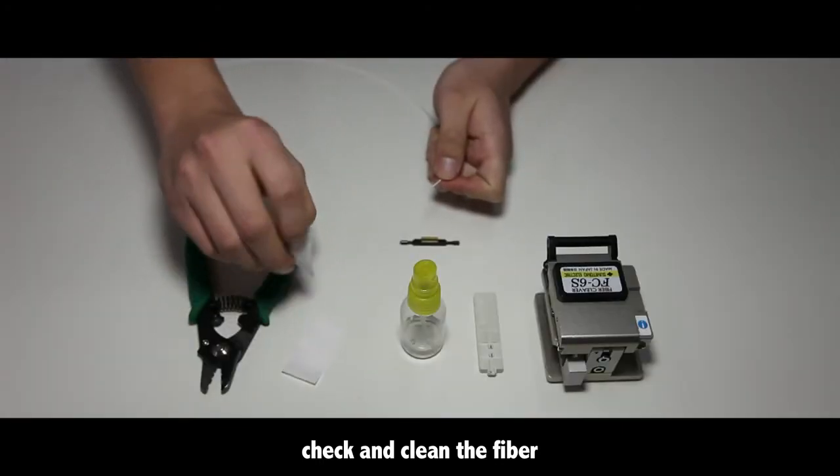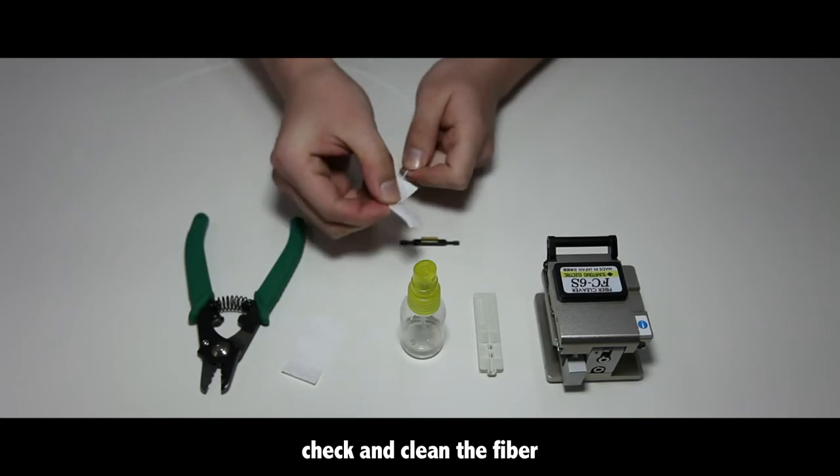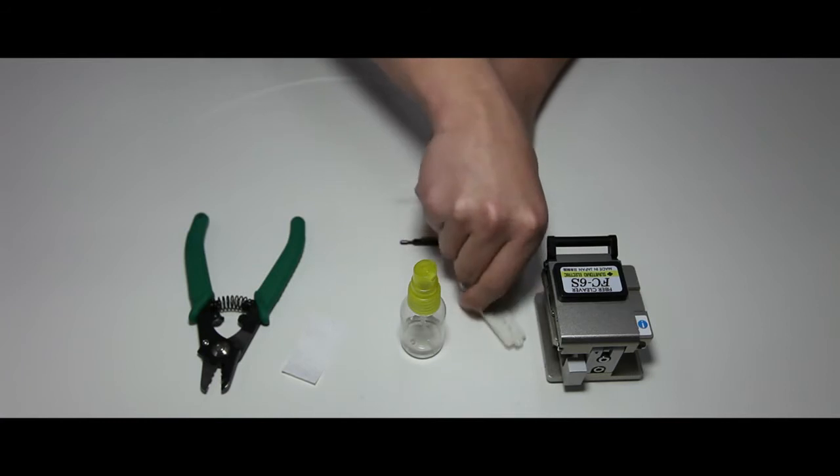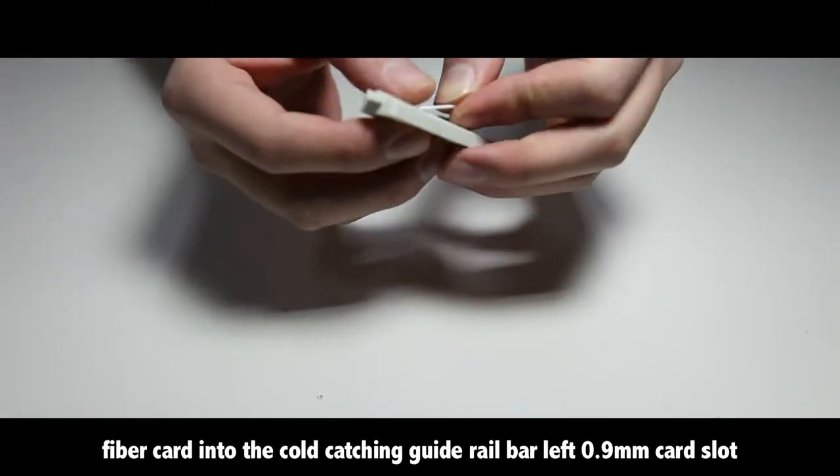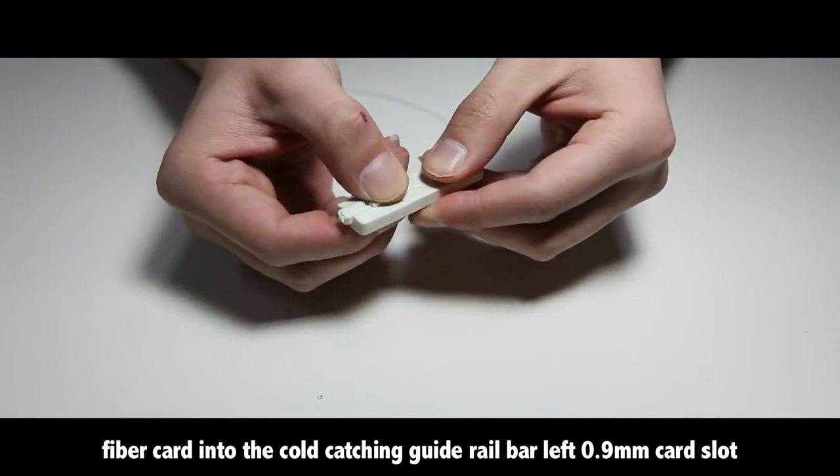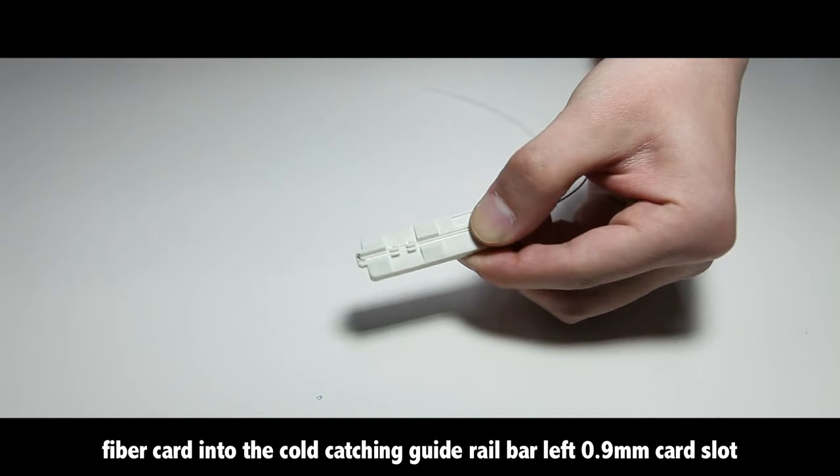Check and clean the fiber. Insert the fiber card into the cold catching guide rail bar, using the left 0.9mm card slot.